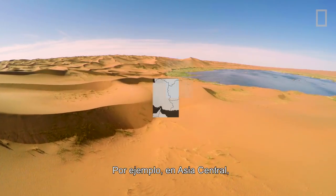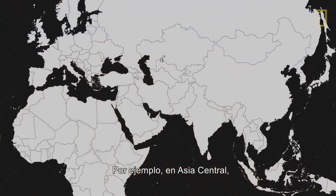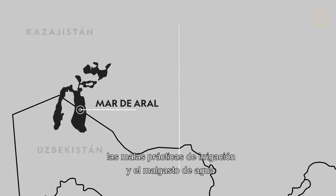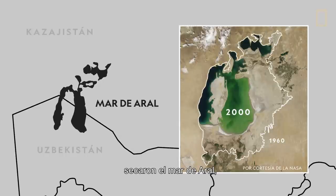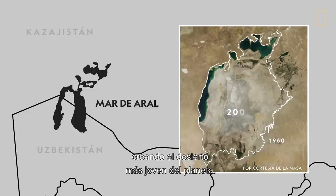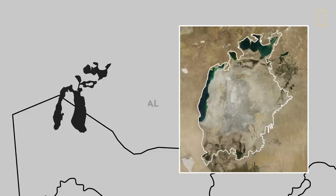For instance, in Central Asia, poor irrigation practices and excessive water usage dried up the Aral Sea and formed the youngest desert on the planet.